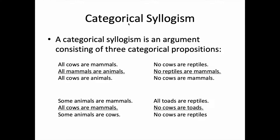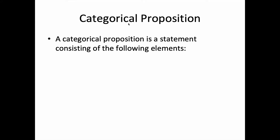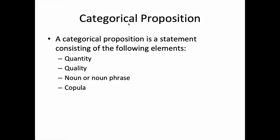Each syllogism consists of two premises and a conclusion. Each of the premises and the conclusion is a categorical proposition. Remember, a categorical proposition is a statement consisting of the following elements: quantity, quality, a noun or noun phrase, and a copula.